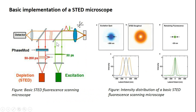In the basic implementation of a STED microscope, we use an excitation laser as in confocal microscopy, but additionally we use a STED beam which is phase modulated and red shifted. The excitation creates a spot as in confocal, while the STED beam forms a donut shape incident on the sample except at the central focal point. This is why we can achieve resolution of 20 nanometers. Only the central focal spot is allowed to emit fluorescence while others are depleted.